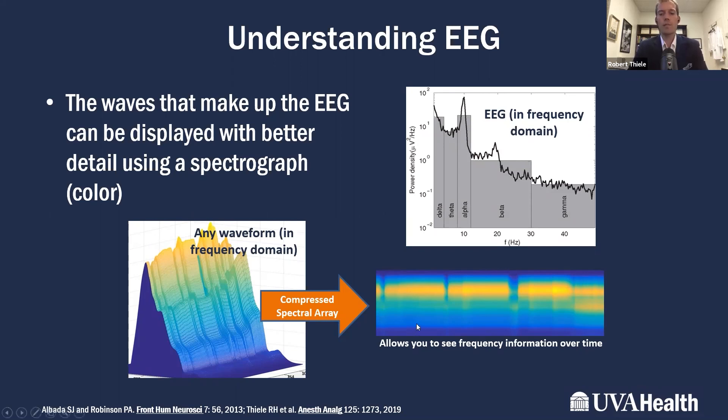What that allows you to do is actually to describe three dimensions using only a two-dimensional space. On the right, you see now you have time on the x-axis, you have frequency on the y-axis, and the intensity of the waveform at individual frequencies is denoted by the color. Yellow is high-intensity or bright, and blue is no-intensity, not bright.